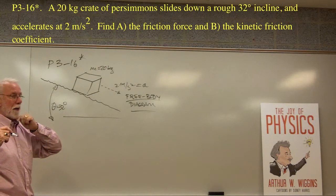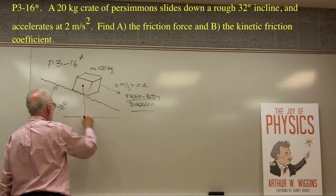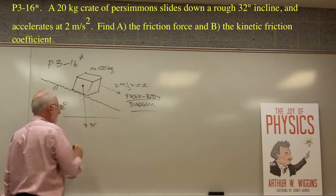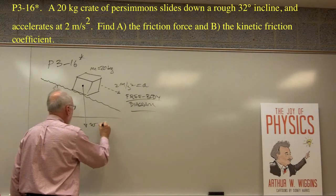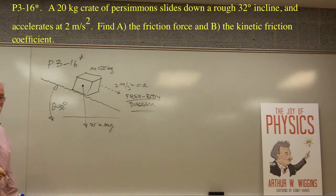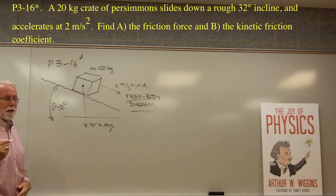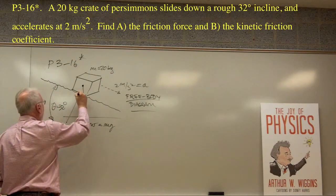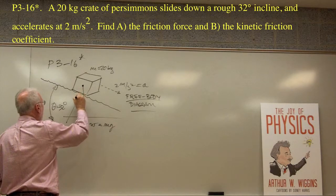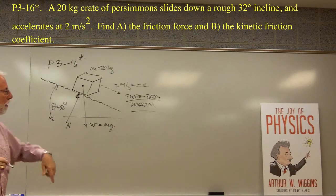What forces are there typically? There's the force of weight, which acts vertically downward — W equals mg, being pulled toward the center of the earth. This crate is also in contact with the plane, so there's a normal force N exerted by the plane, perpendicular to it. The plane is supporting the crate.